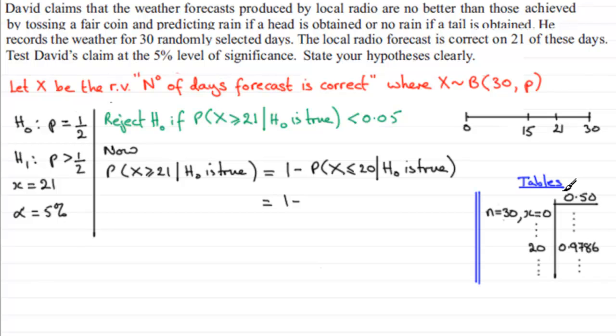Now I've got an extract that I got from my binomial cumulative tables. I looked under N being equal to 30 and X equaling 0 and I went down that column where we've got 0.5 as the probability P. And when I got to 20, I found that it was 0.9786. So we've got 1 minus 0.9786, and what does that come to? It comes to 0.0214, and this value is less than the 5%, less than 0.05.